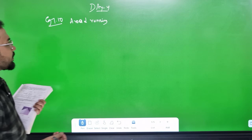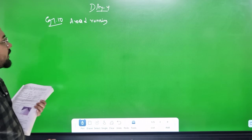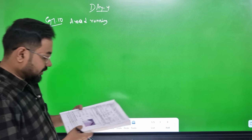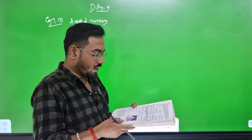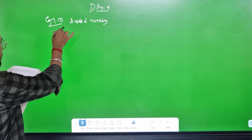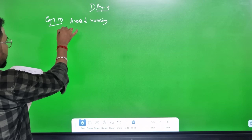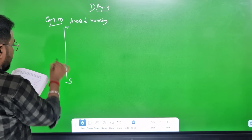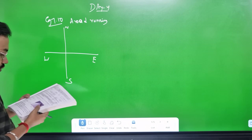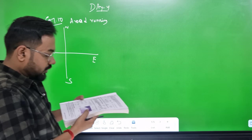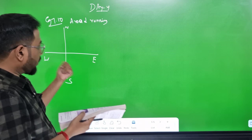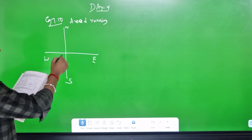Now the 4th question is Day 4, question 7.10. We are going to learn about this. One road is running north to south, and another road is going east to west, intersecting at point P.